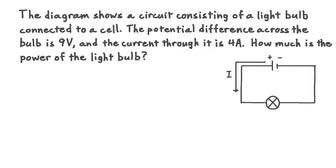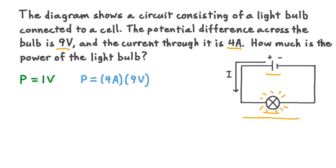Now let's look at a second example. The diagram shows a circuit consisting of a light bulb connected to a cell. The potential difference across the bulb is 9 volts and the current through it is 4 amps. How much is the power of the light bulb? We can recall the relationship P equals I times V. Applying this, we substitute 4 amps and 9 volts. Multiplying these quantities together, we find a result of 36 watts — the power of the light bulb, likely given off both as light and heat energy.